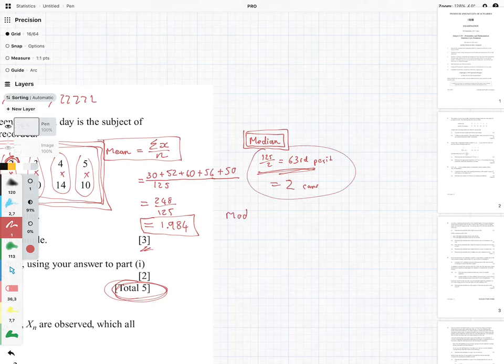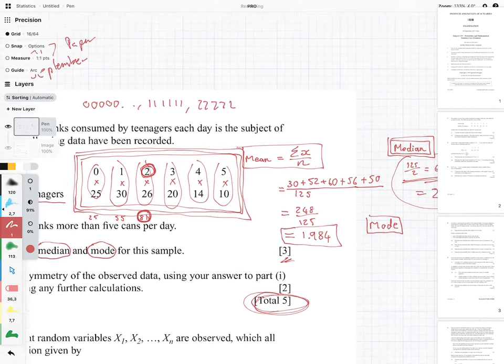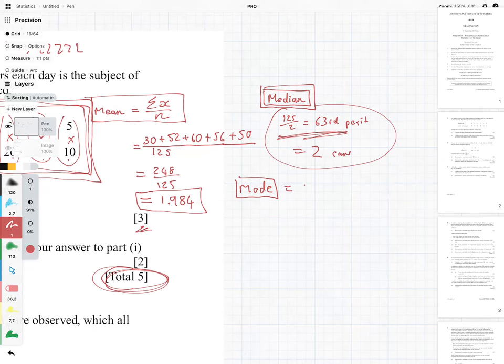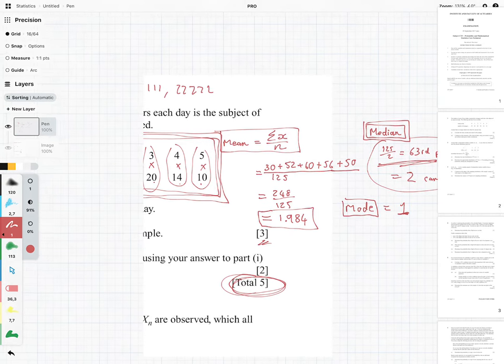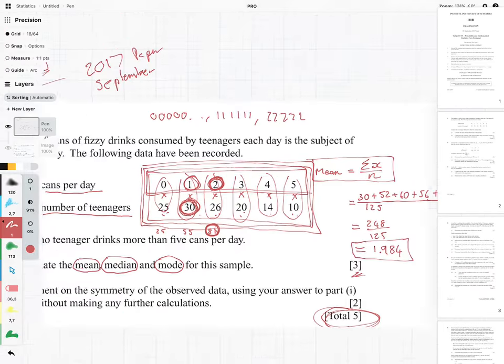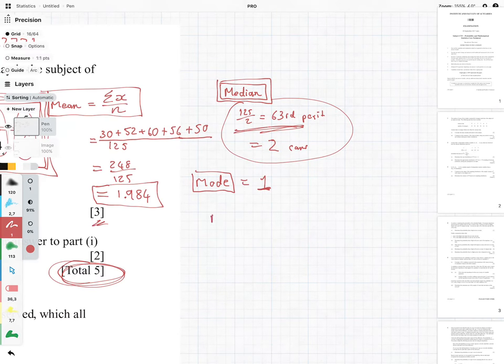And then the mode is the most easiest of them all. That is just which one has the highest frequency. And here we can see 30 is the biggest number between 25, 30, 26, 20, 14, 10. So the mode is going to be equal to 1. Don't write 30. Don't be silly. Don't write 30. Remember, these are the values that we're interested in, and that's just the frequency of how often they're occurring. So we're looking at 30, but then we're going to be choosing the number 1. So we have the mean is equal to 1.984, the median is equal to 2, and the mode is equal to 1.